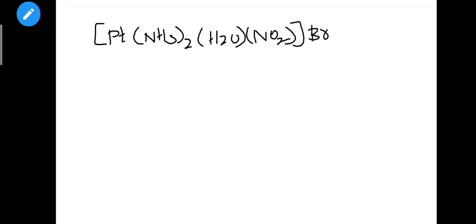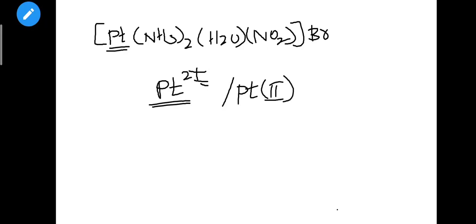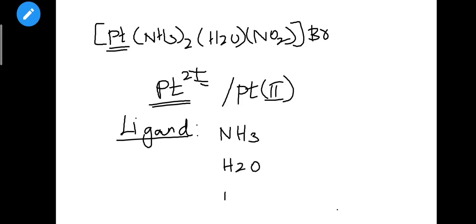Next, we have a complex: Pt(NH3)2(H2O)(NO2)Br. It is described in terms of the central metal atom, ligands, and coordination entity. To find the oxidation state of Pt, you count using the full mark. The ligand types present are NH3, H2O, and NO2. The coordination bracket contains Pt, NH3, H2O, and NO2. Br is outside the bracket as a counter ion.